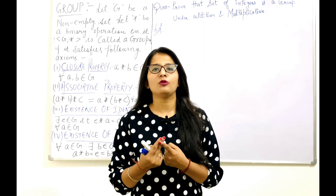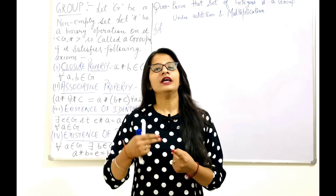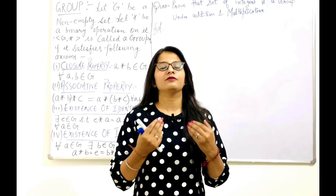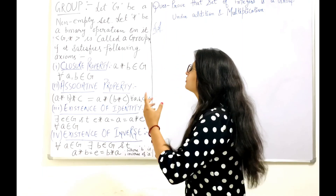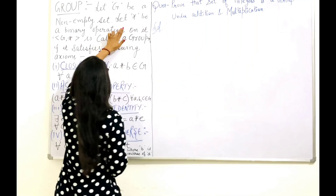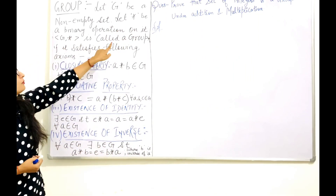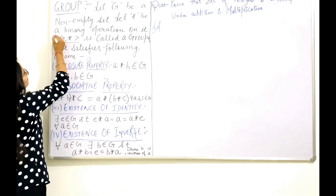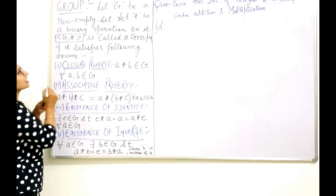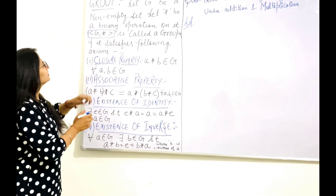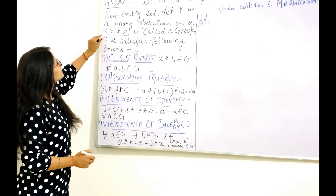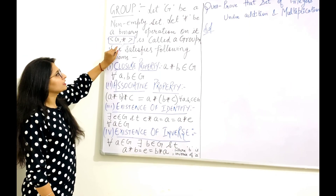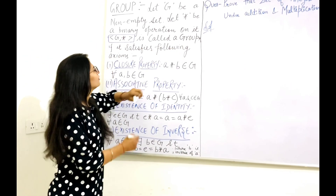Star can be any operation — it can be addition operation, it can be multiplication operation, and so on as it will be mentioned in the question. So let G be a non-empty set and let star be a binary operation on it. This G star is known as an algebraic structure. That set with its operation is called a group.